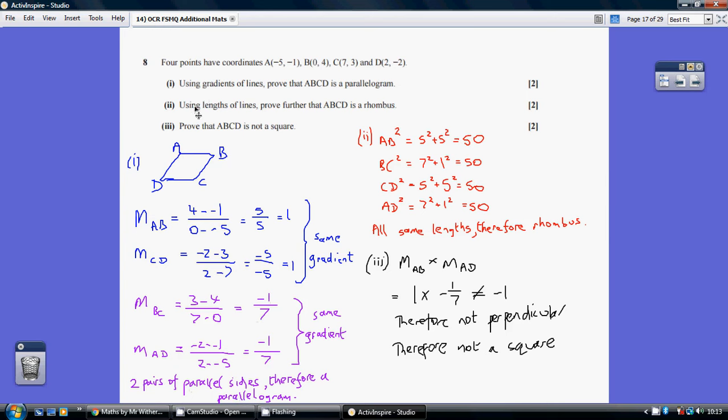Part 2 tells us to use lengths of lines. We'll do four lots of Pythagoras to show that each of these four lines are the same length, because a parallelogram with equal sides is a rhombus. I haven't bothered square rooting; I've just left it as the side squared.